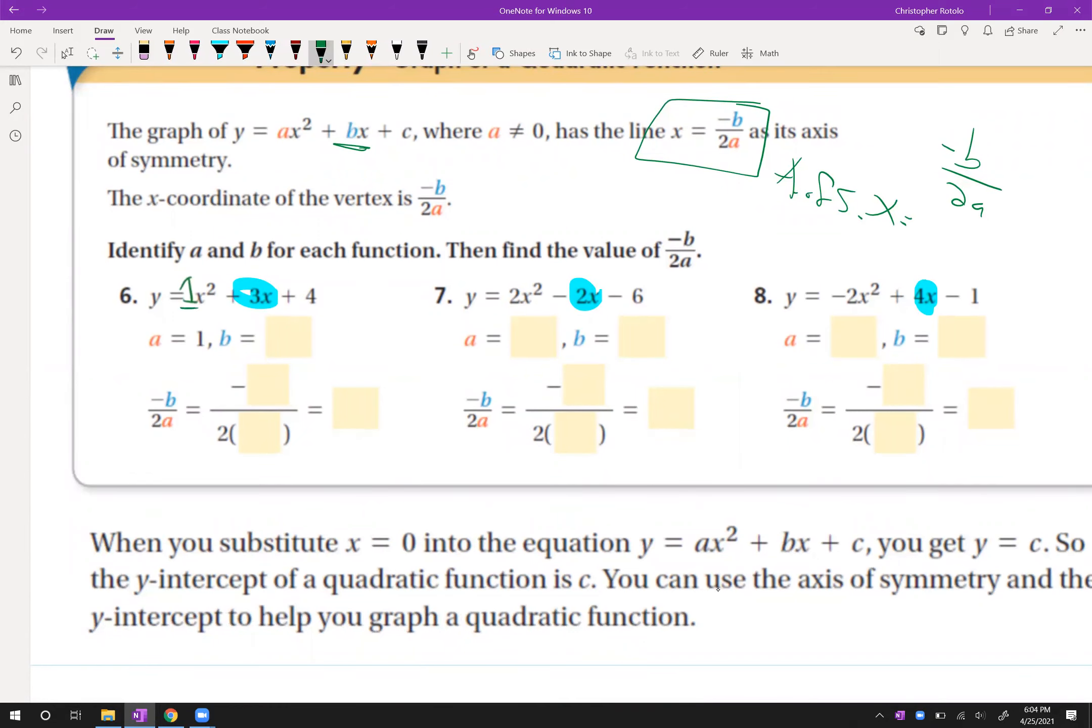So in this case, A is one. Remember there's an imaginary one there. I drew it in this time. B is 3. So negative 3 over 2 times 1. So this is negative 3 over 2. And that's going to be that vertical line that would be in the middle of the whole thing.